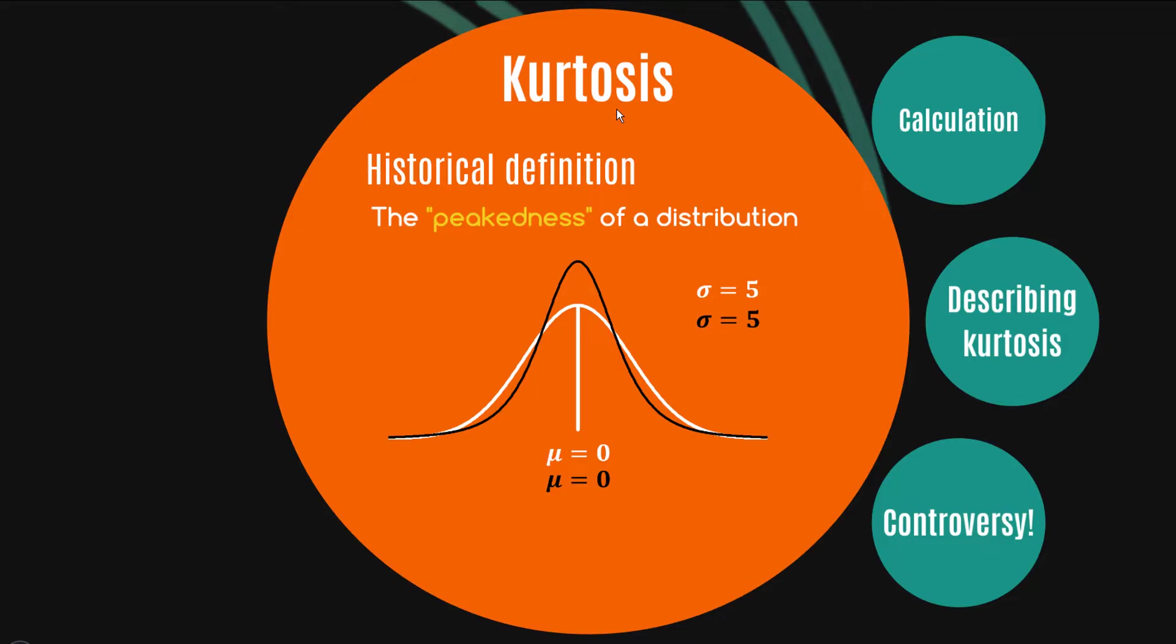So the whole point of kurtosis is to find a way for us to differentiate between these two distributions because as I said, they can both have the same mean and standard deviation yet look quite different in shape. And they also both have zero skew as well. So in comes kurtosis, and we might say that the black curve is more peaked and has fatter tails than the white curve, and we would then say the black curve has a higher kurtosis.